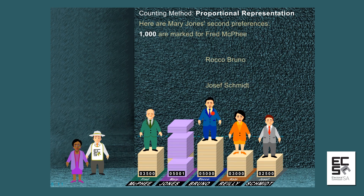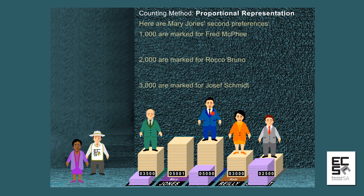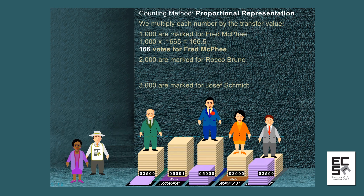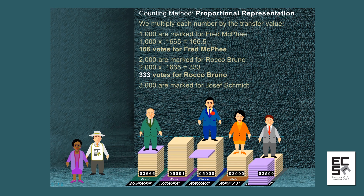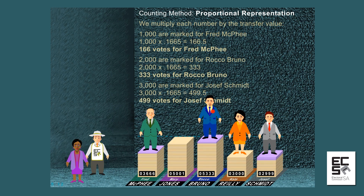Here are Mary Jones's second preferences: 1,000 are marked for Fred McPhee, 2,000 are marked for Rocco Bruno, and 3,000 are marked for Joseph Schmidt. Applying the transfer value: 1,000 times 0.1665 equals 166.5, giving 166 votes for Fred McPhee; 2,000 times 0.1665 equals 333 votes for Rocco Bruno; 3,000 times 0.1665 equals 499.5, giving 499 votes for Joseph Schmidt.